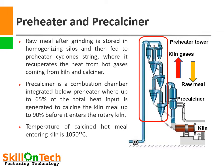After the bottom cyclone, the material enters the pre-calciner system. The pre-calciner is a combustion chamber where up to 65% of total required heat is provided. Most of this heat is required because calcination of limestone is a very endothermic process and requires a lot of energy. Clinker formation is actually an exothermic process, so not much heat is required there. As the hot meal leaves the pre-calciner to enter the kiln, its temperature reaches 1050°C.